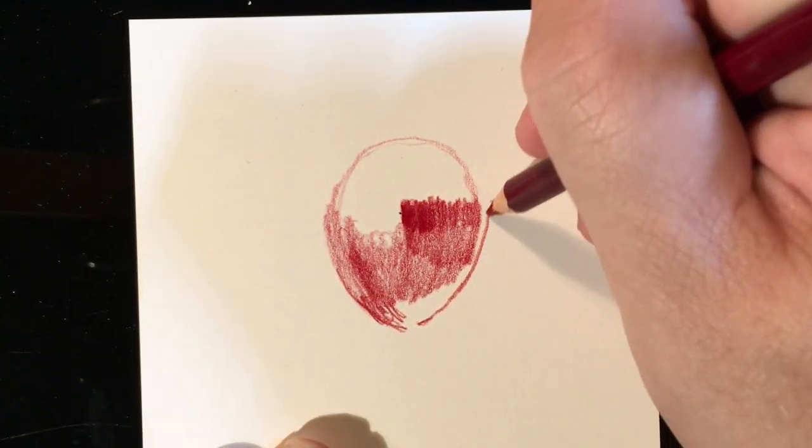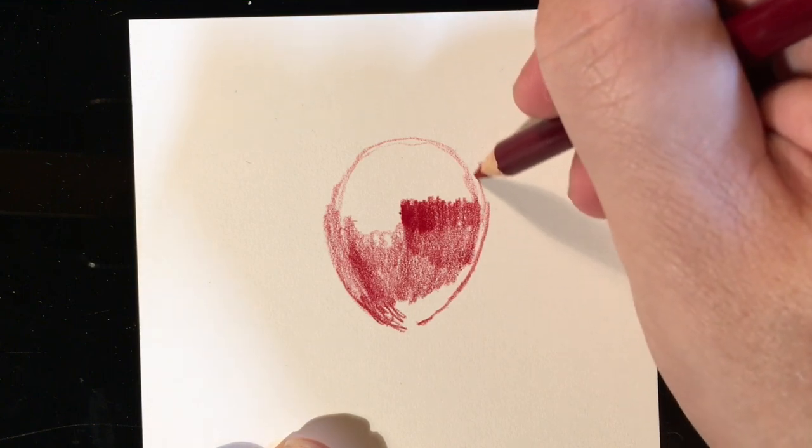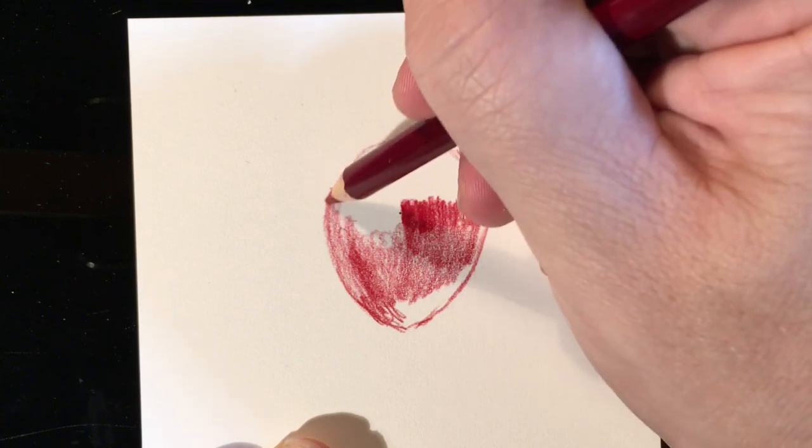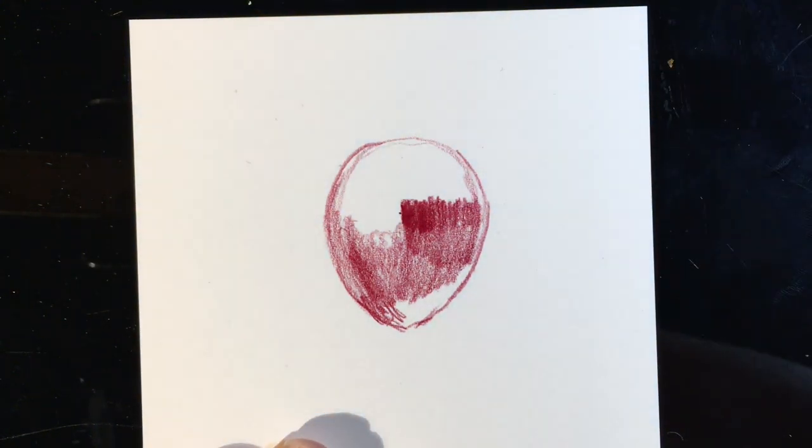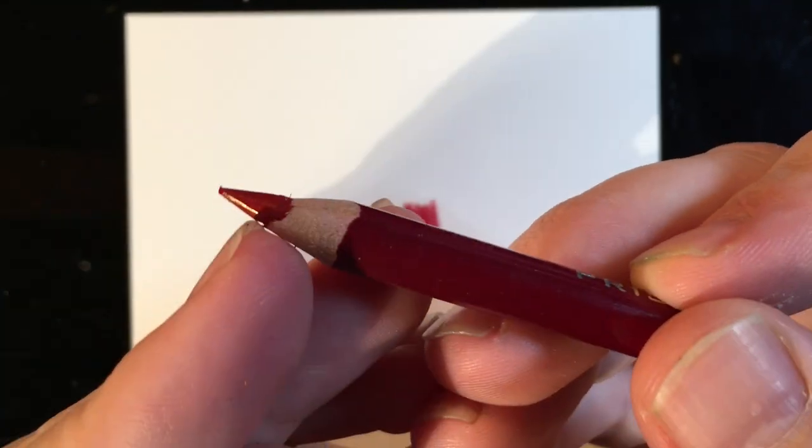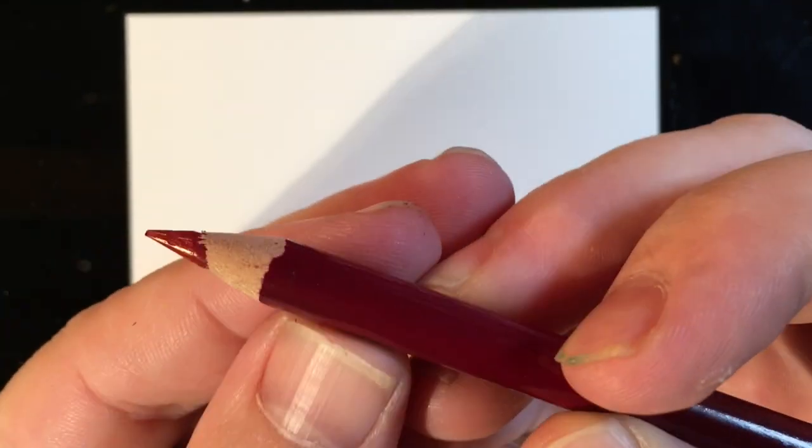If you do drop them what can happen is they can get a break in the core even though they haven't been sharpened yet, and then when you get to that point where there's a break on the inside of the core you sharpen it and you press down and all of a sudden the tip just breaks even though you didn't put too much pressure or anything. It just breaks right out of place because there's already a break there.